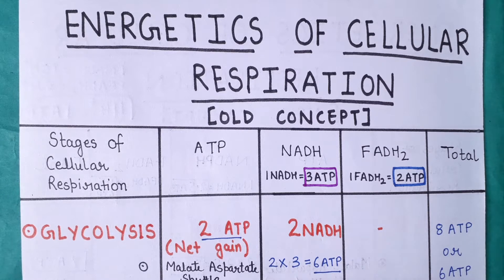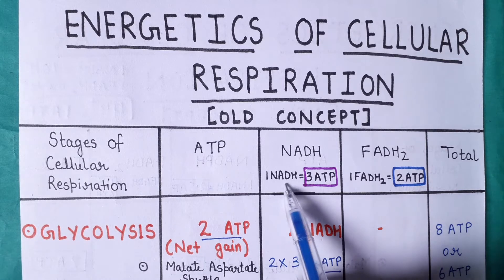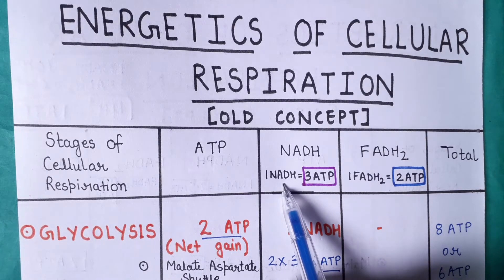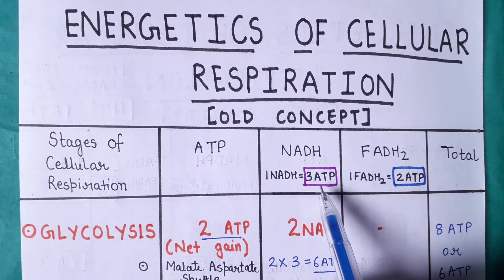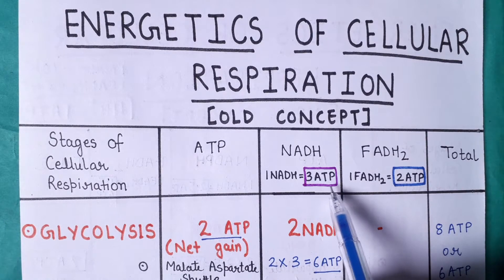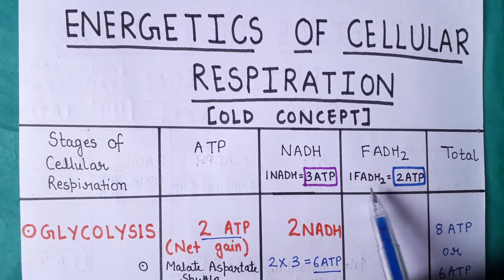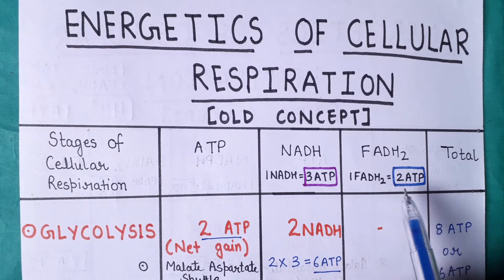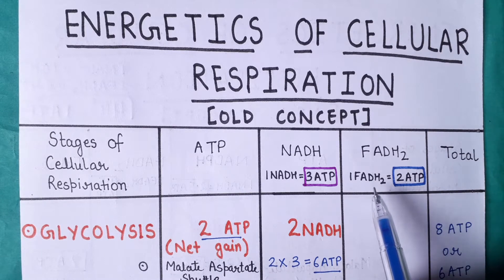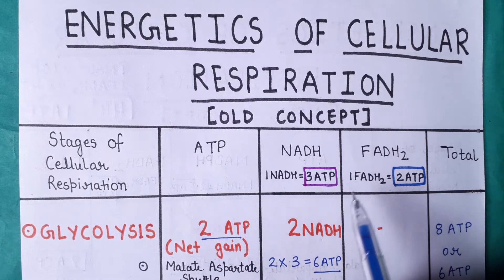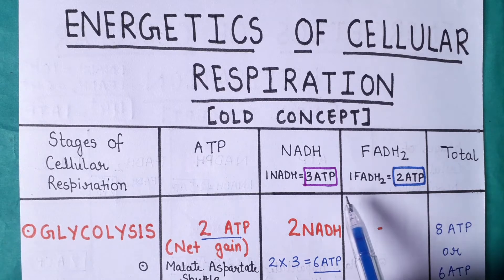According to the older concept, one molecule of NADH will give you 3 ATP, and one molecule of FADH2 will give you 2 ATP. We will calculate the overall energetics of cellular respiration using these values for the old concept.